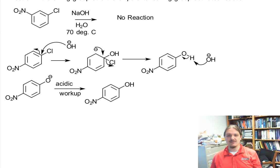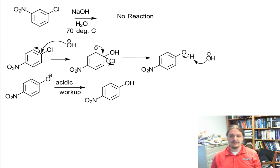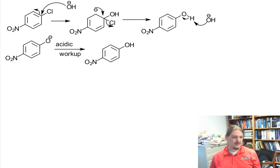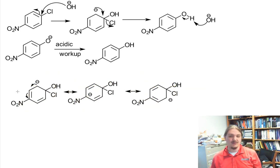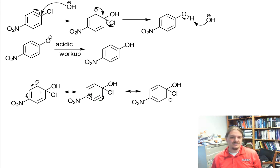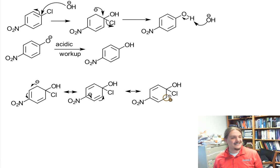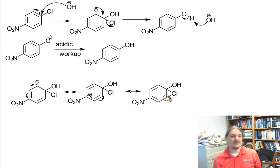This mechanism doesn't immediately show what's special about the ortho and para positions. I'm going to take this Meisenheimer complex — this carbanionic intermediate — and draw out all of its resonance structures. Here we have the resonance structures for this intermediate drawn around the ring. You can see that when the nucleophile attacks, you generate a negative charge ortho to the leaving group, para to the leaving group, and ortho to the leaving group again. This ortho-para-ortho pattern is exactly the charge pattern in electrophilic aromatic substitution, except electrophilic aromatic substitution involves cations.